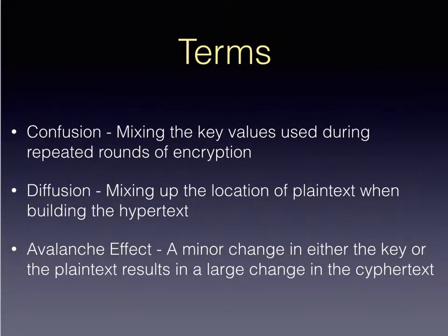Confusion is mixing the key values used during repeated rounds of encryption. Diffusion is mixing up the location of plaintext when building a ciphertext — take a block of plaintext from here, move it up front, take another block, move it to the middle. The avalanche effect is when a minor change in either the key or the plaintext results in a large change in the ciphertext. This is a good thing.